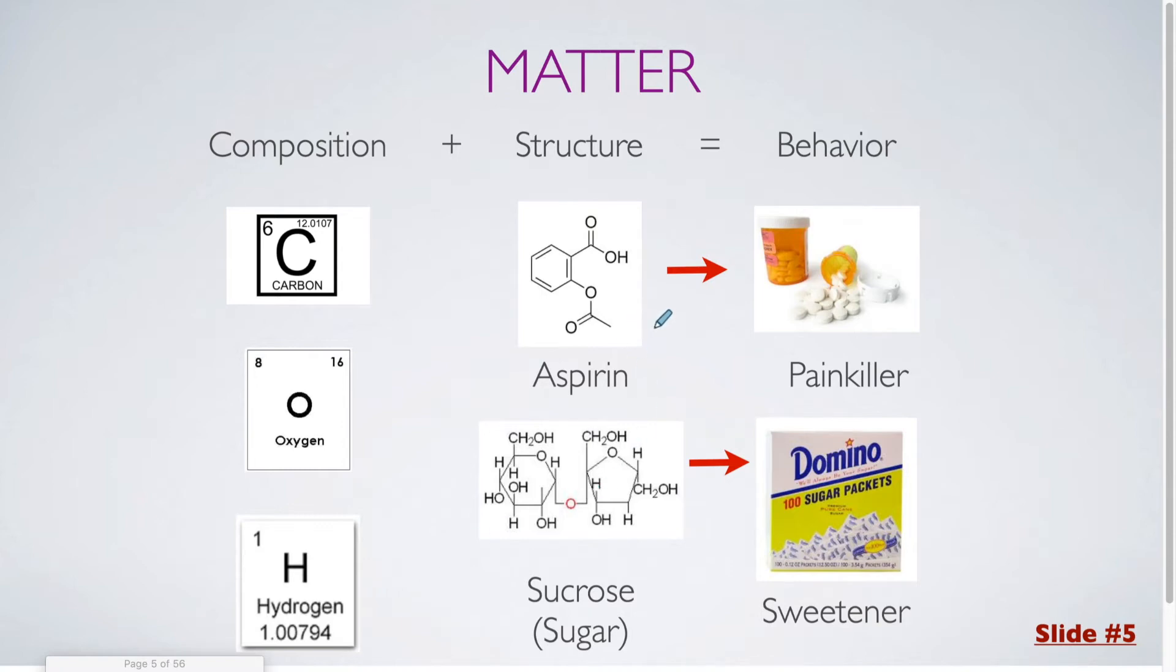Now you don't have to understand how to draw or even to interpret these specific types of diagrams. These are related to organic chemistry, but at the very least you should be able to tell that they're different. In this picture for aspirin, we have this ring structure with these two separate subgroups that are coming off of it.